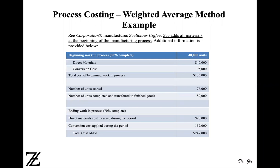So here is the example. Z Corporation manufactures delicious coffee. Z adds all materials at the beginning of the manufacturing process. I underlined this sentence because this is important — when you add material is going to determine your number of equivalent units. Please keep in mind that in process costing, we can add materials at different points in time, whether we're using job costing or process costing.